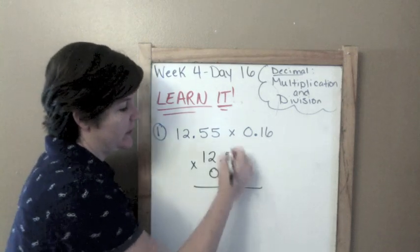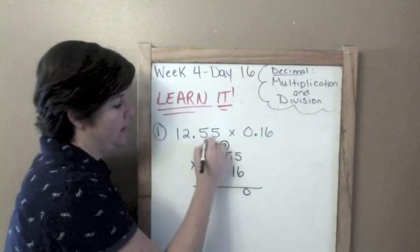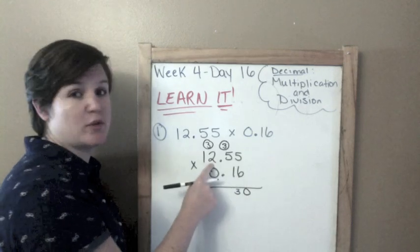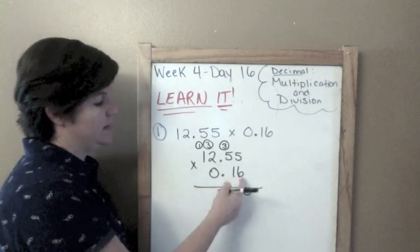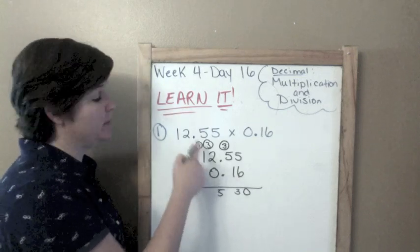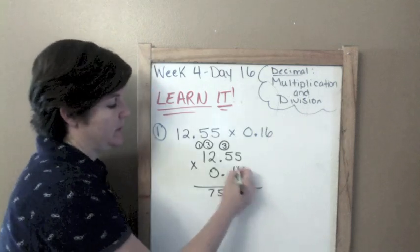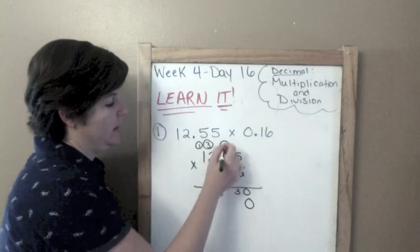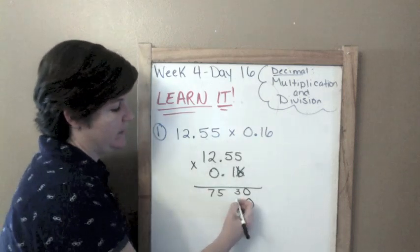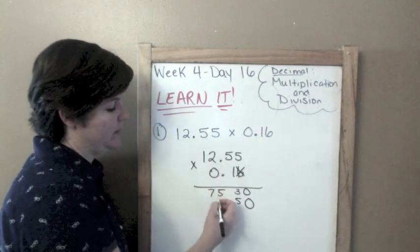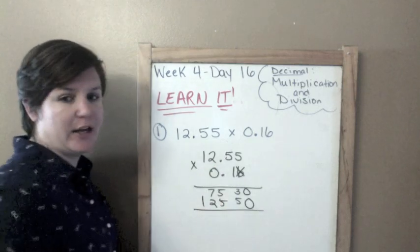Alright? So, 6 times 5 is 30. 6 times 5 is 30, plus 3 is 33. 6 times 2 is 12, plus 3 is 15. 6 times 1 is 6, plus 1 is 7. Don't put any decimals in yet. Now, I'm done with the 6. I'm going to put a 0 here to hold the place, and I'm going to get rid of my regroupies.